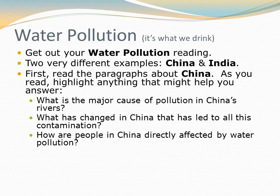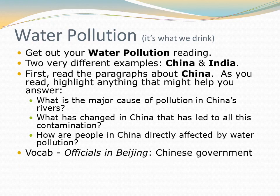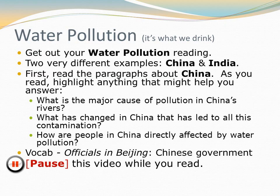We're starting with the section on China. As we read, look out for these things: What is the major cause of pollution in China's rivers? What has changed in China in recent years that has led to all this contamination? And how are people in China directly affected by this pollution? A vocabulary note: when the reading talks about officials in Beijing, know that Beijing is the capital of China — so they're talking about government officials and their response. Pause the video while you read the first few paragraphs, the section on China.